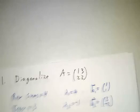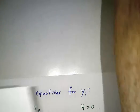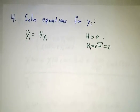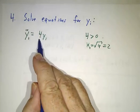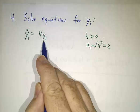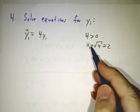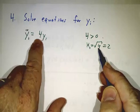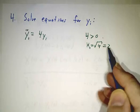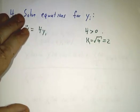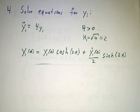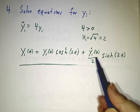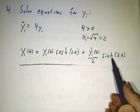And we solve the equations. Equation for y1, well y1 double dot is a positive number times y1, so we get coshes and sinches, and our kappa value is the square root of 4, so that means 2. So we get cosh of 2t and sinh of 2t. Initial value times the cosh plus initial derivative divided by kappa times the sinh.